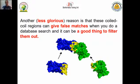We can also search for this bioinformatically, because there is another reason: the coiled-coil region in a protein can give false matches when you do a database search. It can be good to filter them out, as we can see that usually these parts of the protein give false matches, as shown in that figure.